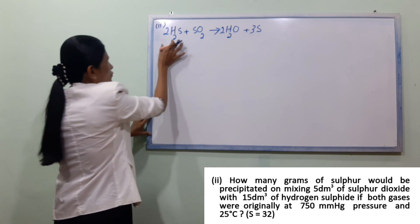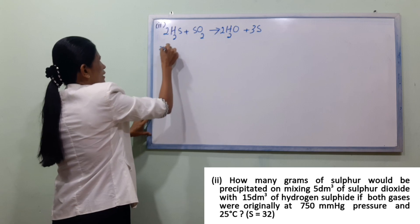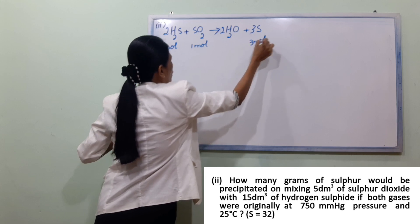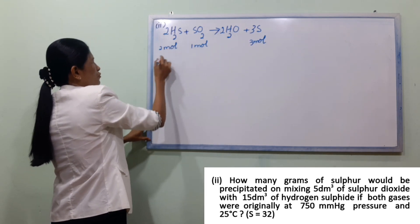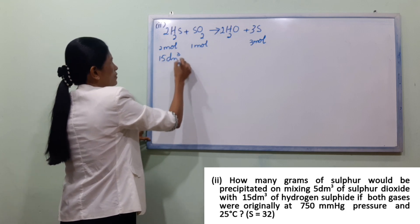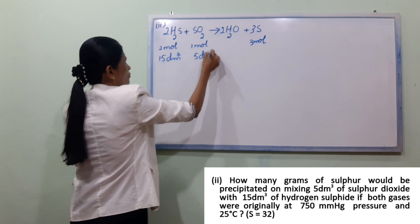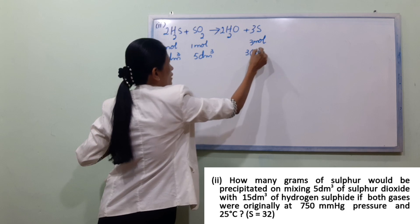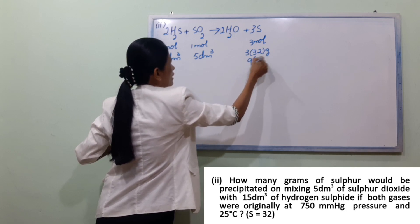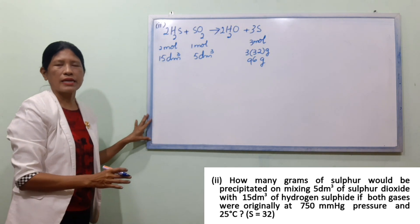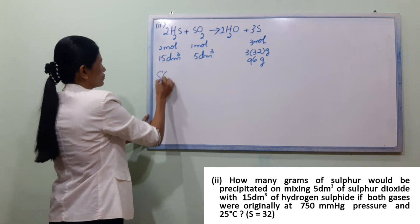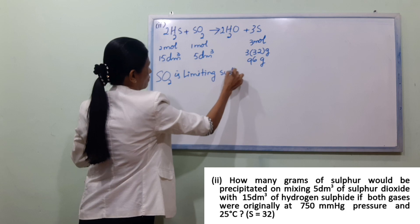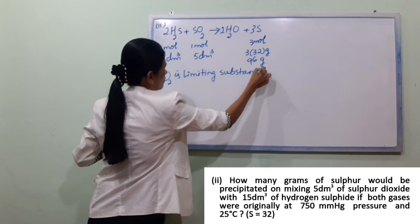The equation is H2S plus SO2 gives H2O plus S. If you put it on the other side you have 2 more, you have 1 more — here are three moles. In this, three moles of hydrogen sulfide at 15 dm³ and 5 dm³. Here are three moles, 3 moles of sulfide at 32 grams gives 96 grams. Here is our limiting substance: SO2 is the limiting substance.